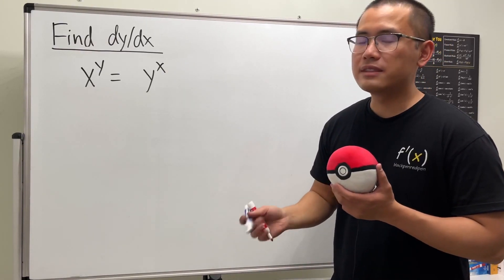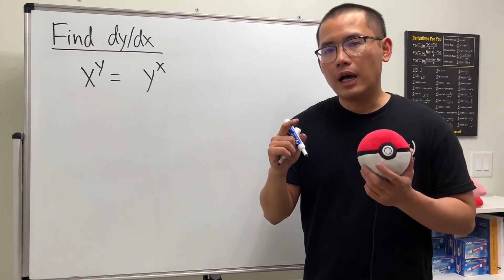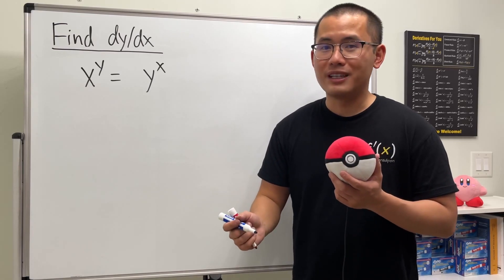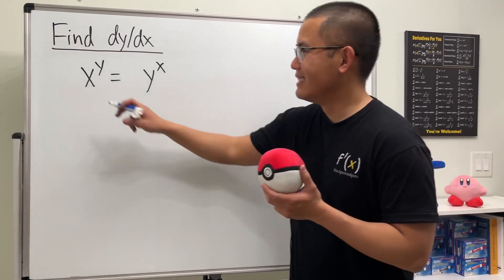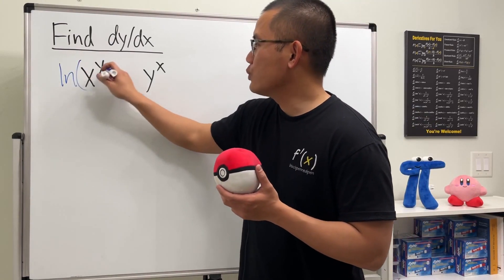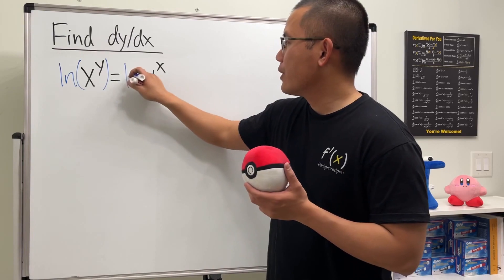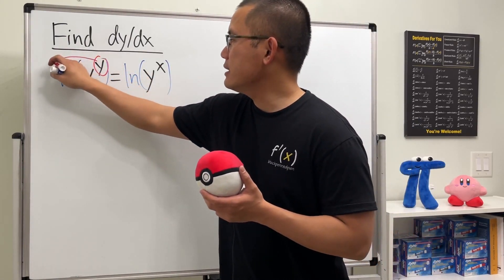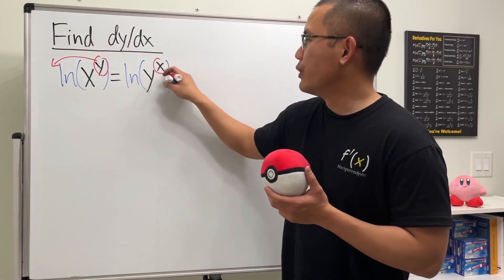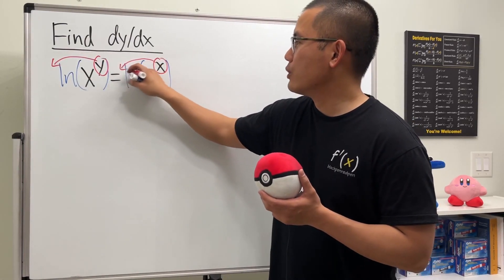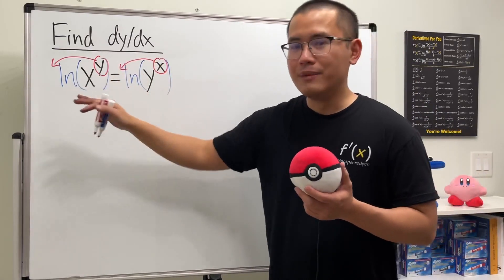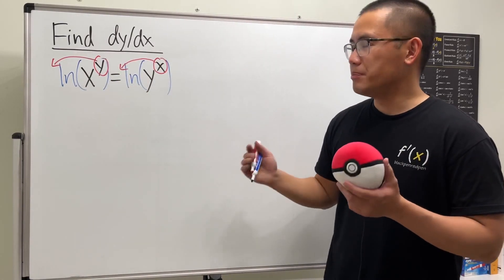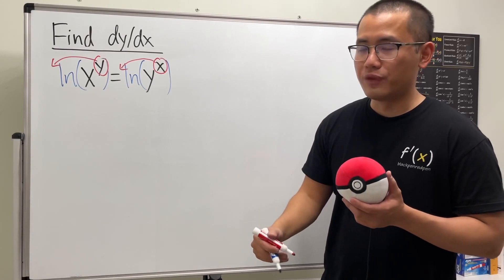So in this case, what we are going to do first is take the natural log on both sides. The reason is so we can bring the power to the front. And do not subtract one, because this is just the log property — it's not the power rule for the derivative.